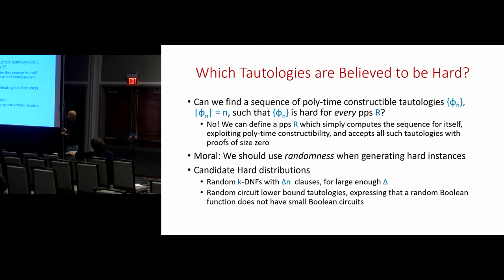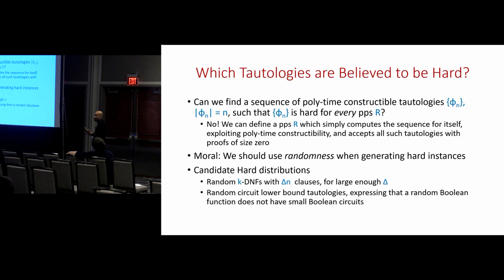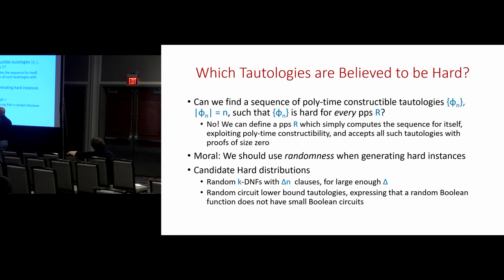The moral is that we should use randomness, or relax the requirement in some other way, when generating hard instances. There are a couple of candidate hard distributions which have been proposed and studied. One candidate is random DNFs: if we take a random k-DNF with δn clauses where δ is fairly large, that's going to be a tautology with very high probability. Intuitively it seems not so easy to prove, and this is related to Feige's hypothesis that random CNFs are hard to solve — but it seems plausible that random k-DNFs are even hard to prove.